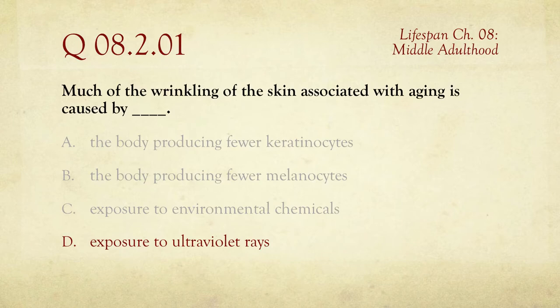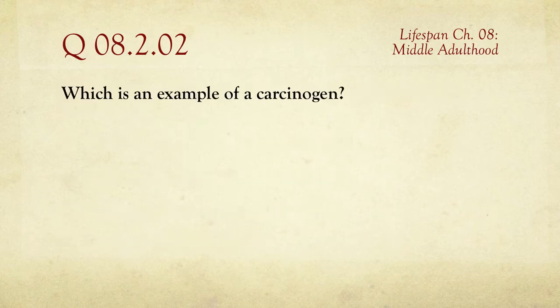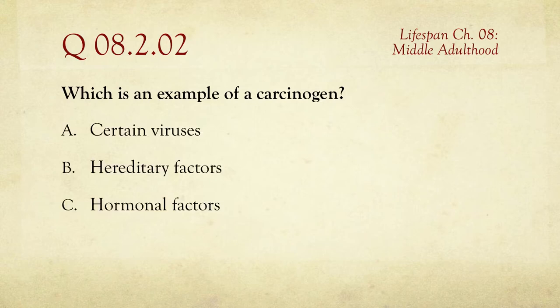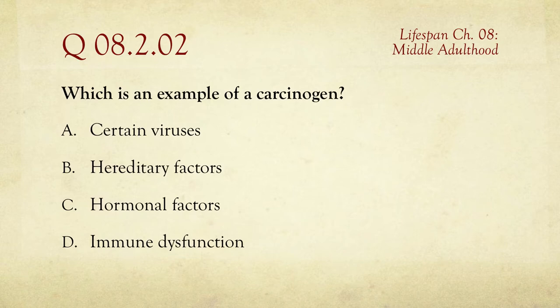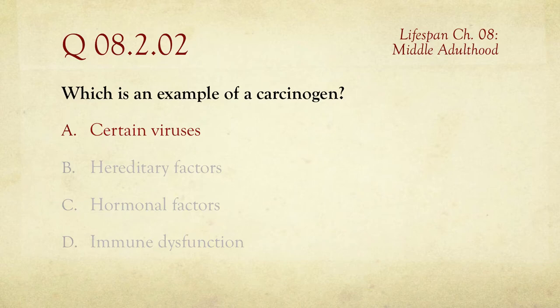One more reason to dress appropriately and cut down the UV exposure. Question number two: which is an example of a carcinogen? Certain viruses, hereditary factors, hormonal factors, or immune dysfunction. A carcinogen is something that causes cancer, and the answer here is certain viruses — hereditary and hormonal factors are not the major carcinogens we're looking at, but a virus can be one.